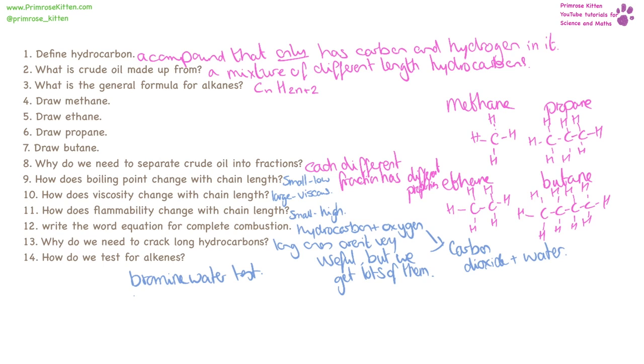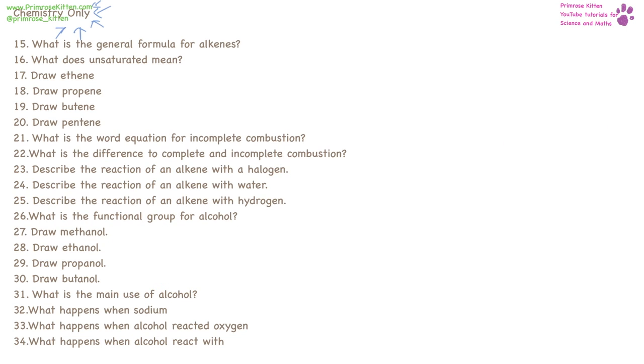And if there are alkenes, double bonds, it will go from orange to colourless. And that wording there, colourless, is really important. The exam board will not accept clear, it has to be colourless. This next lot is for chemistry only. The general formula for alkenes is CnH2N, unsaturated means it has double bonds.